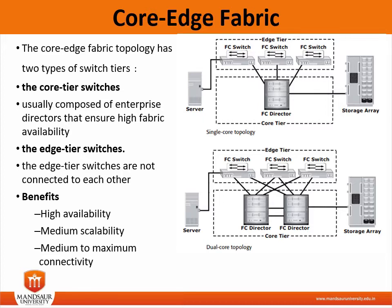The core tier is usually composed of enterprise directors that ensure high fabric availability. All traffic must either traverse this tier or be terminated at this tier. In this configuration, all storage devices are connected to the core tier, enabling host-to-storage traffic to traverse only one ISL.